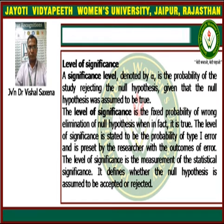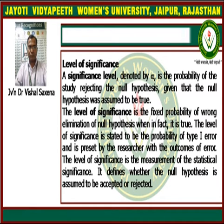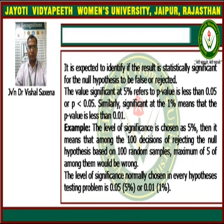The level of significance is related to this first type of error, and that is why it is the probability of Type 1 error, preset by the researcher with the outcomes of error. The level of significance is a measurement of statistical significance, and it defines whether the null hypothesis is assumed to be accepted or rejected. It is expected to identify if the result is statistically significant for the null hypothesis to be false or rejected.